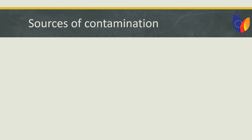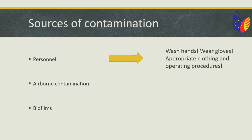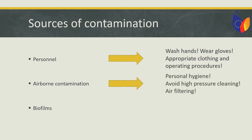But where are these hazards coming from, and how can we control them? The main sources of contamination are personnel, airborne contamination and biofilms. The first source can be eliminated when employees wash their hands, wear gloves and appropriate clothing and follow operating procedures. The second source can be controlled through personal hygiene of employees, avoiding high-pressure cleaning and filtering the air. Finally, the last source can be controlled by regular cleaning of equipment and the application of hygienic design.